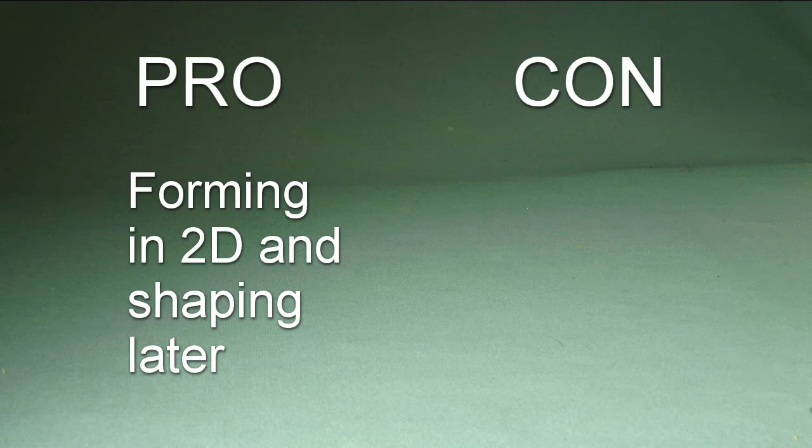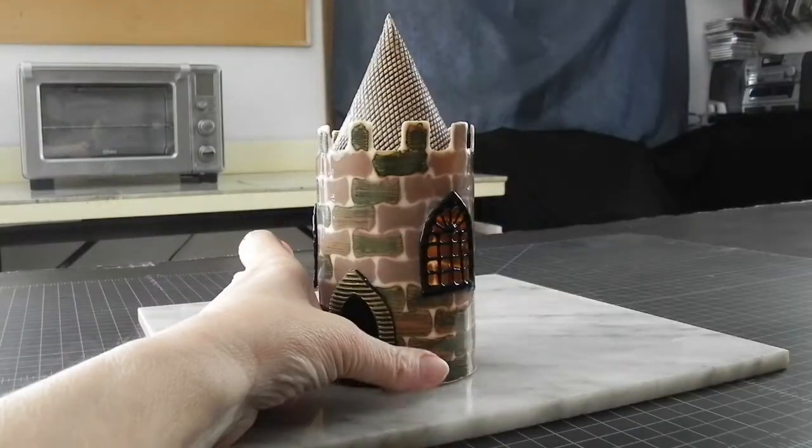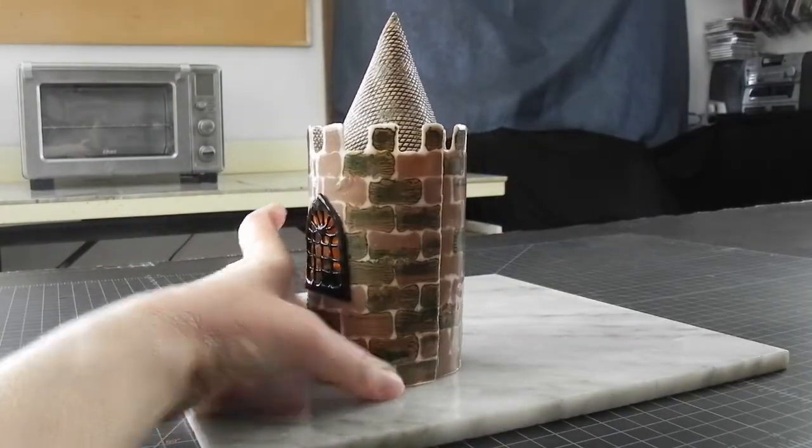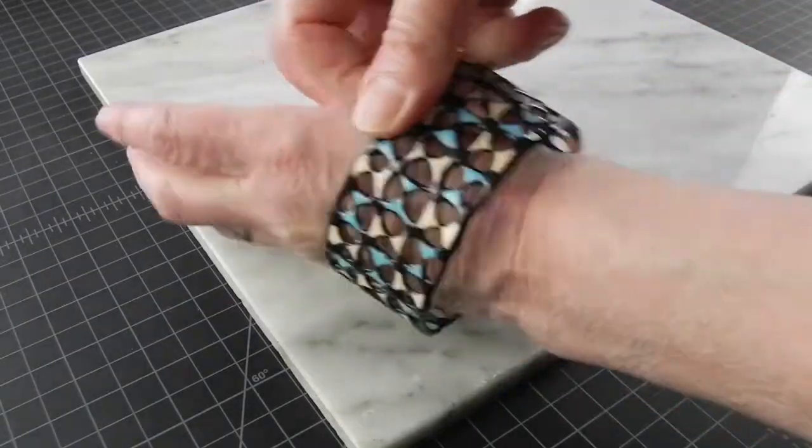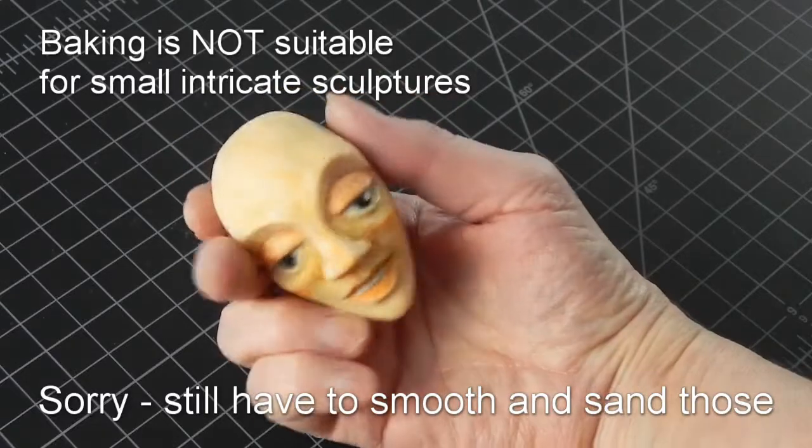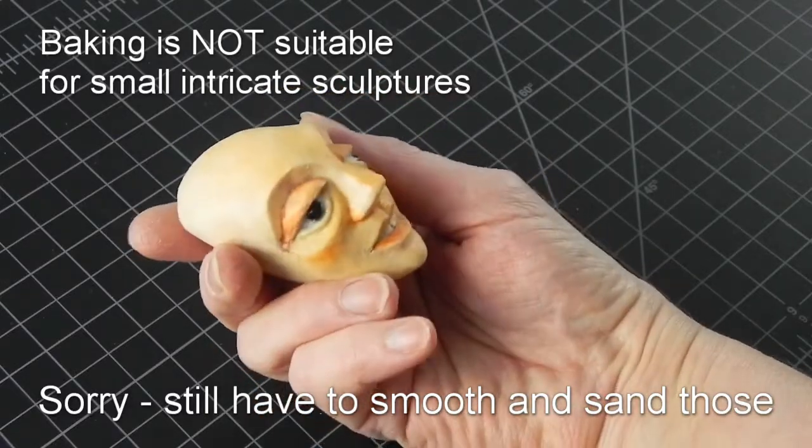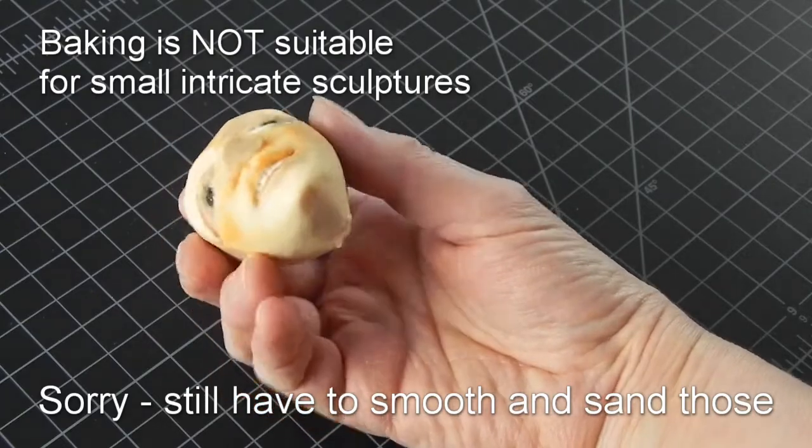This castle tower was shaped after baking and so was this bracelet. But for small delicate sculpting projects I'm sorry to say you will still need to smooth and sand.